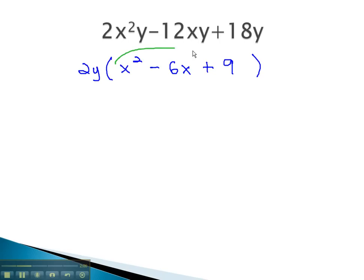We do this by using the AC method, where we multiply to 9 and add the negative 6. Notice those numbers will be negative 3 and negative 3.